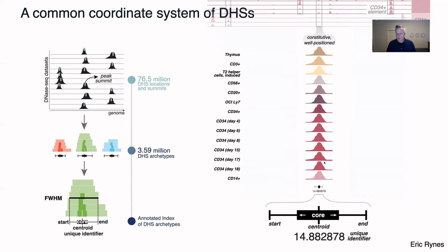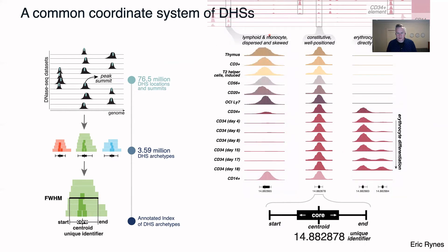To give you an example, zooming in on a particular DHS, we see that for this element there is a start position, an end position, a centroid position — which is basically the consensus summit across all these individual peaks — along with a so-called core region, which captures 95% of all the summits across datasets. This core region tells you how well positioned the DHS is — the positional stability of that element. For an element that's less well positioned, the DHSs detected across different cell types are much more dispersed and skewed, and even though we can still assign start and end positions, the core region or positional stability is much less well defined.